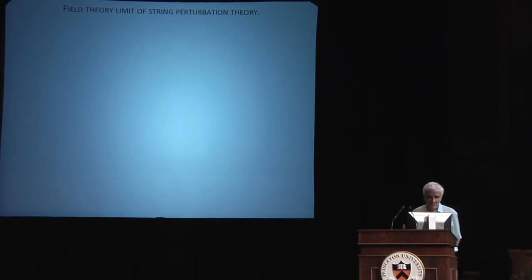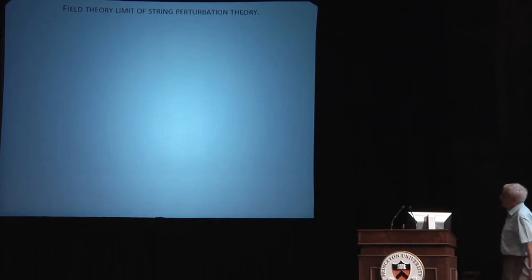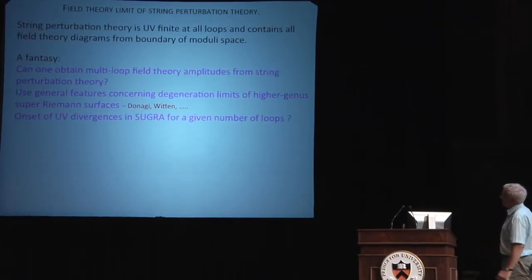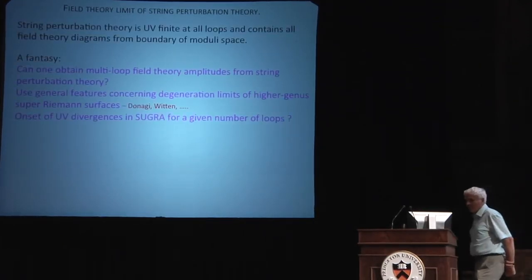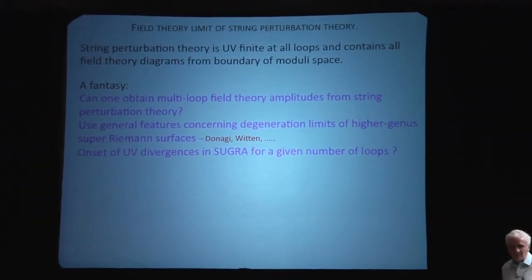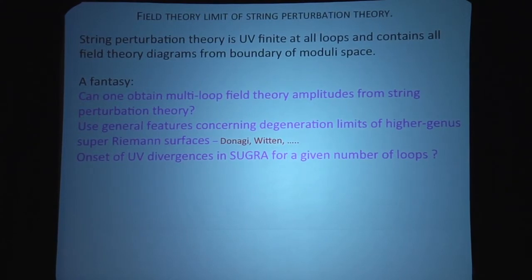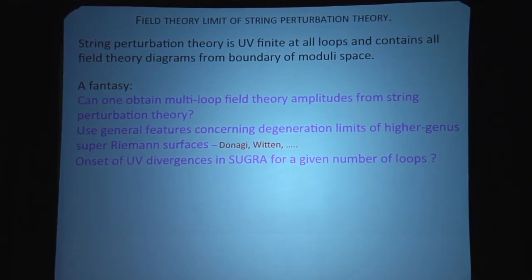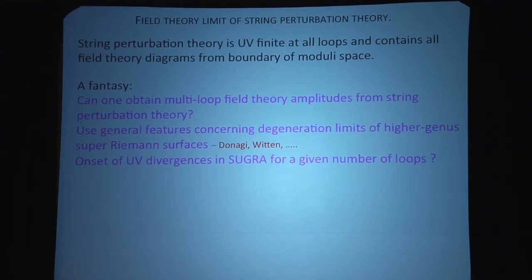I've got no minutes left, which means I'm eating into my time. I've got a couple more transparencies, though. So here is a fantasy. Since there's only one diagram at any order in string perturbation theory, and since the low energy limit, since there is a limit of string theory which is supposed to reproduce field theory, is there any sense in which one might hope to produce these wonderful field theory results by looking at higher genus string theory amplitudes and using general features, some of which have been uncovered by papers by Edward Witten and Donagi and others, in order to arrive at a statement about supergravity, for example, at a given number of loops.